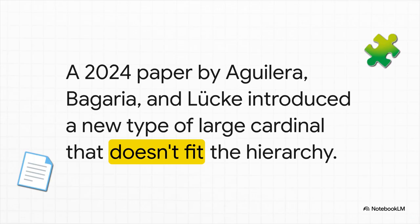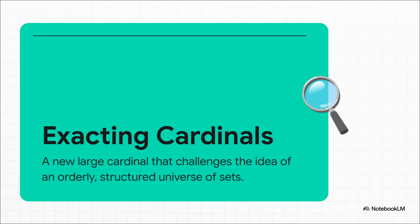And let me tell you, it's a real troublemaker. Why? Because it just doesn't seem to fit anywhere in the established hierarchy. They called them exacting cardinals. And what makes them so disruptive is their core property. See, unlike all the other infinities that actually help reinforce the orderly structure of math, exacting cardinals are defined by a kind of fundamental messiness they introduce into the universe of sets.